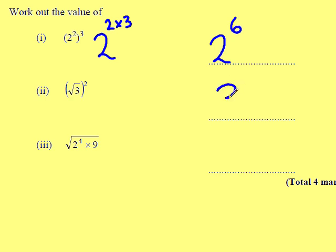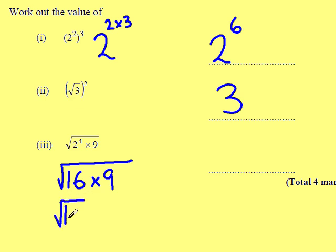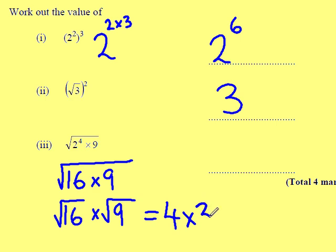The only number I'm left with is 3. Square root of 2 to the power of 4 times 9 — we know 2 to the power of 4 is 2 times 2 times 2 times 2, which is 16 times 9. Square root of 16 times square root of 9 — this is called 'thirds' because we're splitting the square root — leaving an answer of 4 multiplied by 3, which is 12.